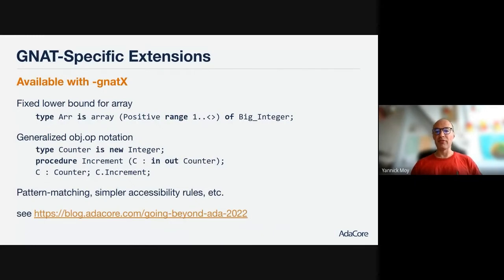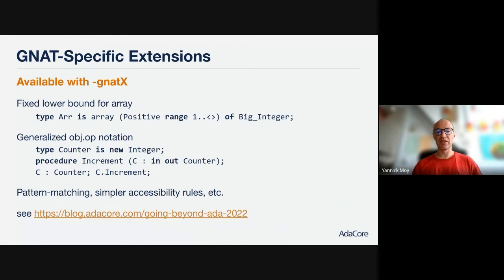There are also evolutions of Ada done inside GNAT in preparation for a possible future version of Ada, available with the -gnatX switch for GNAT extensions. One interesting and simple one is the fixed lower bound for arrays. You can now declare that, for example, type R — an array of Big_Integer — always starts at index 1. Whenever you pass an R or a slice to a procedure or function expecting a parameter of type R, there will be a slide so the slice is reset to start at index 1. This is quite convenient, especially for SPARK, where you would previously have used dynamic predicates.